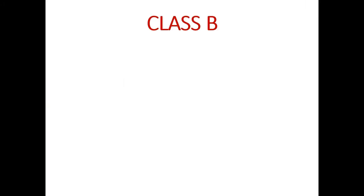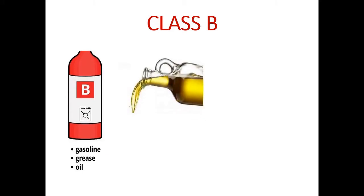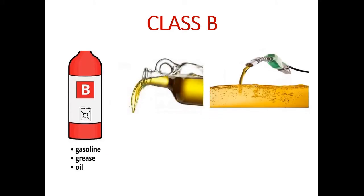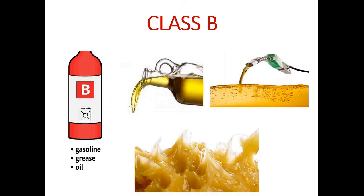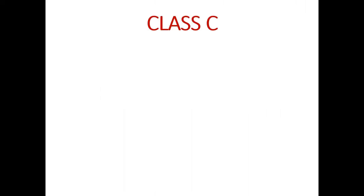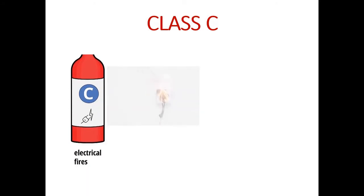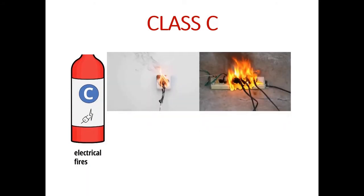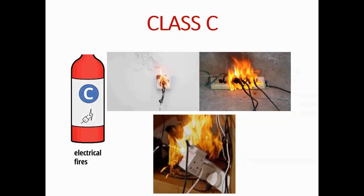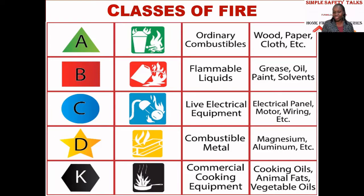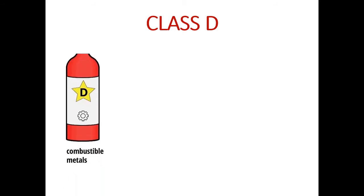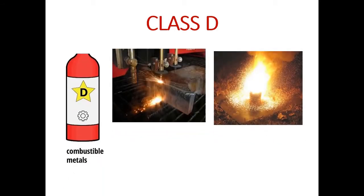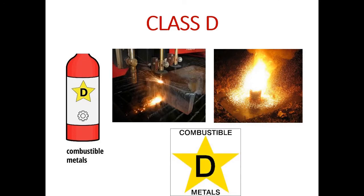Class B covers flammable liquids such as grease, oil, paint, and solvents. Class C covers live electrical equipment — in some schools of thought it is called Class E. Examples include electrical panels, wirings, and motors. Class D covers combustible metals like magnesium and aluminum.